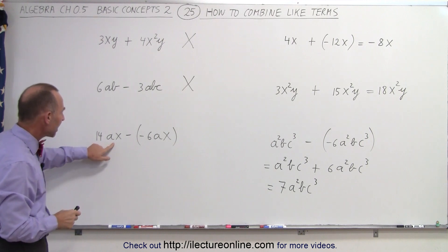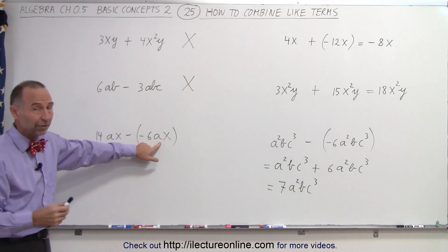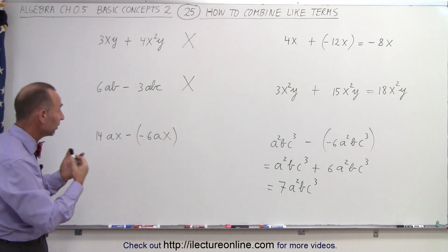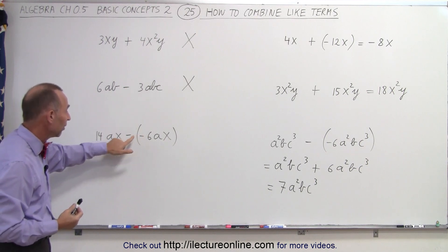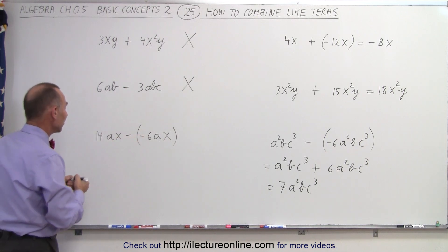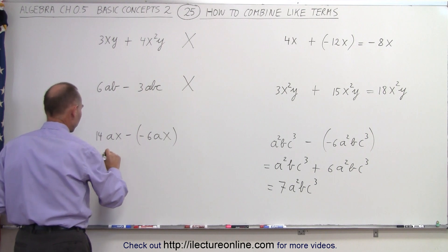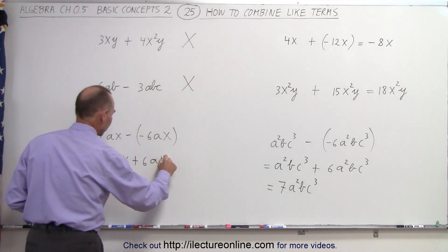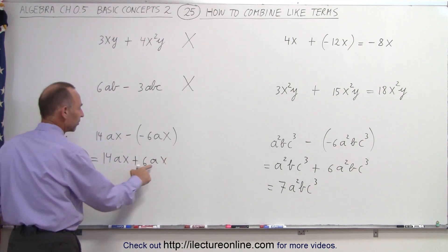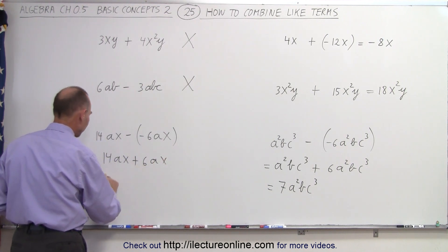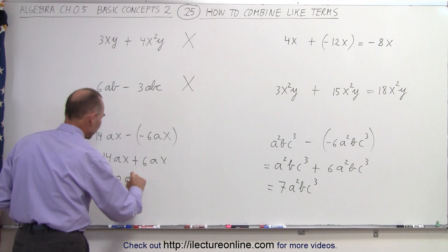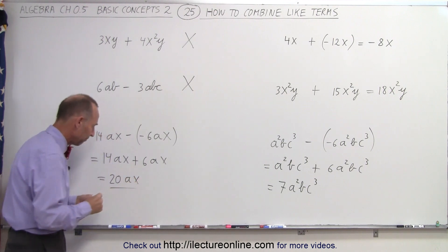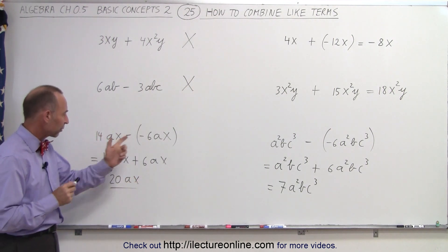Here, notice we have ax and ax, so therefore they are like terms. We can go ahead and subtract this from that, but since it's negative, subtracting a negative number is the same as adding a positive number. So 14ax plus 6ax—we have 14 of them here, 6 of them there. Together we have 20 times ax, and that's the final result when we subtract one from the other.